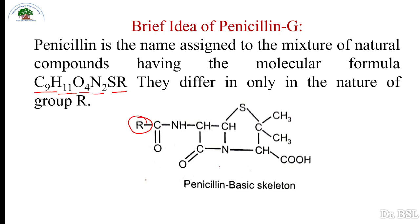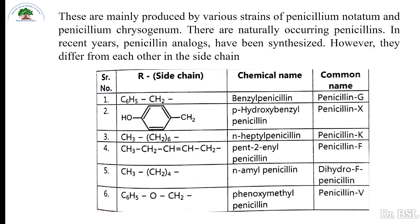This is the basic skeleton of the penicillin molecule. If we change the R group, we get different types of penicillins. Some penicillins are naturally occurring and are mainly produced by various strains of Penicillium notatum and Penicillium chrysogenum.